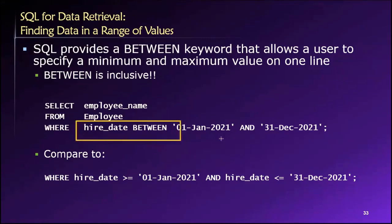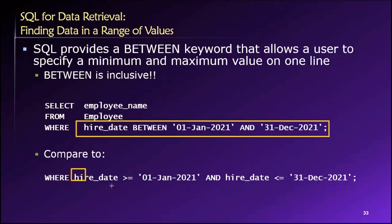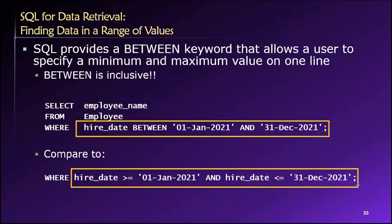So this here is identical in meaning to what you see here. In both cases we're telling the database to give us the names of all of the employees in the employee tables for those employees that were hired during the year 2021. So anyone that was hired between January 1st, 2021 and December 31st, 2021 qualifies as someone that was hired during that year.